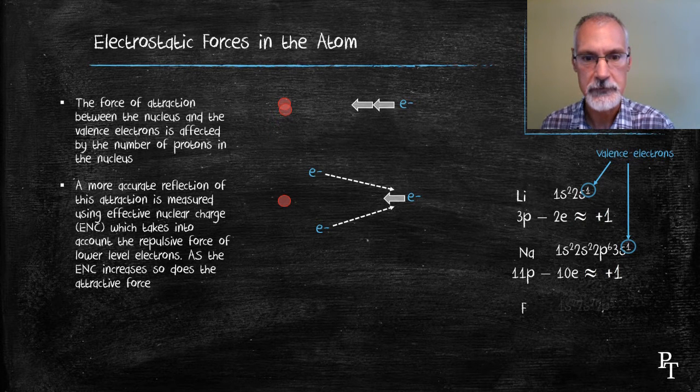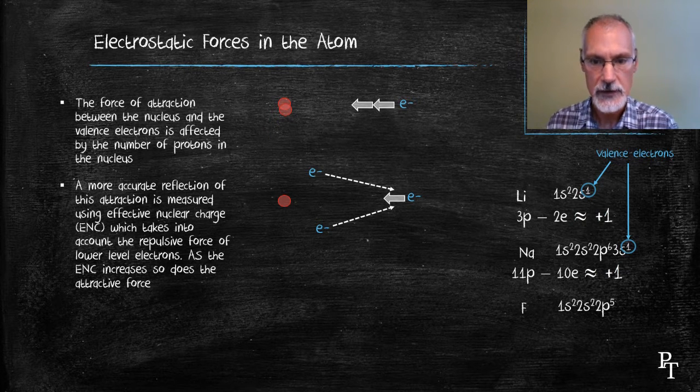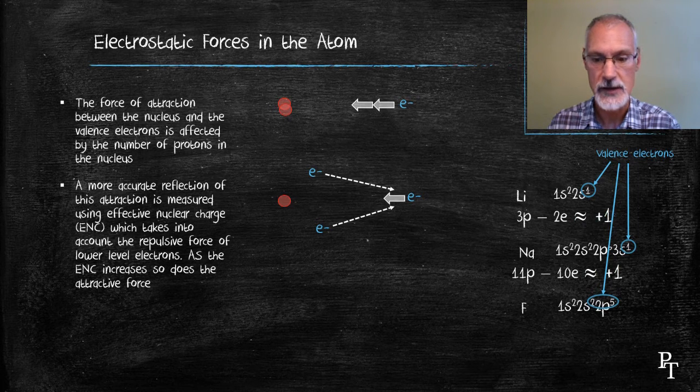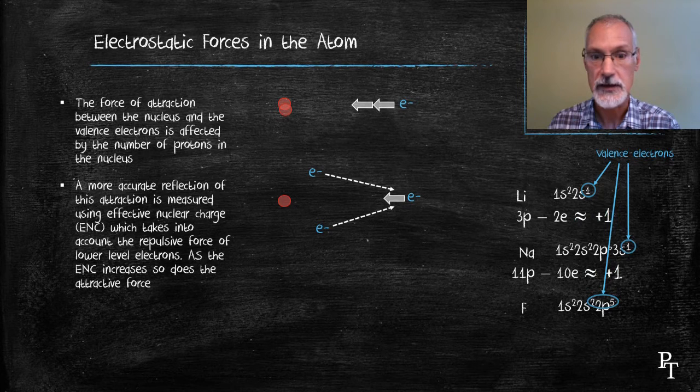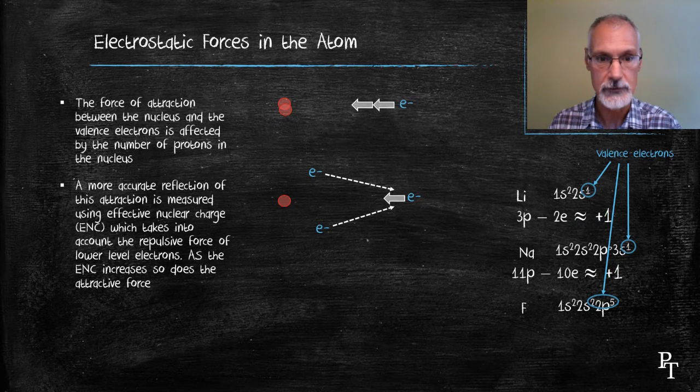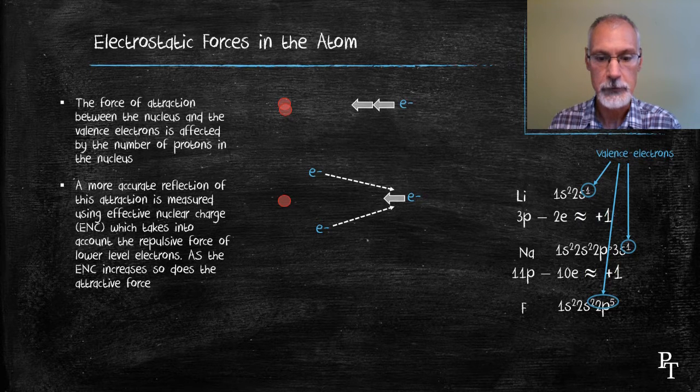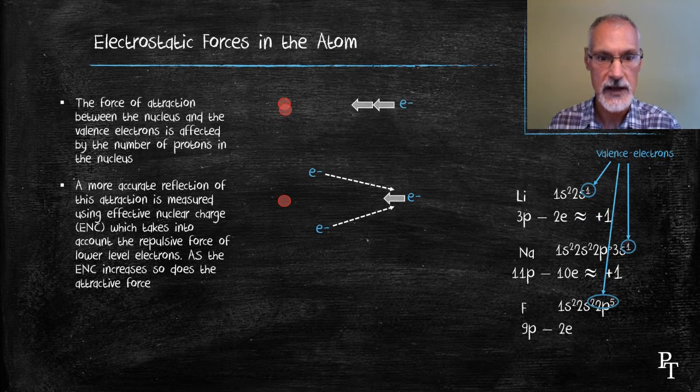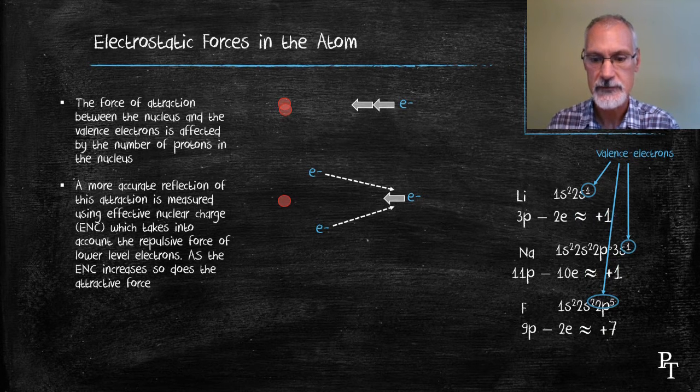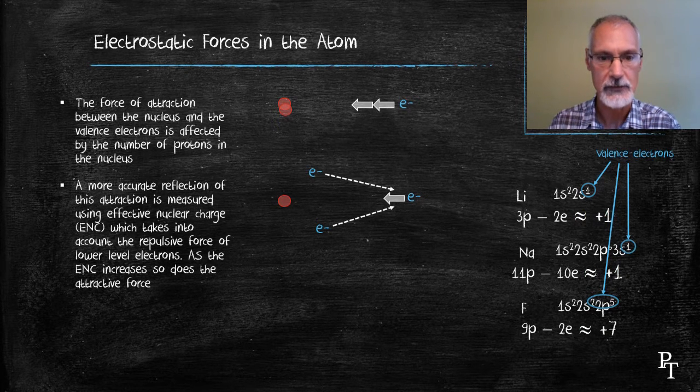Fluorine has the following configuration. Again, I'll identify its valence electrons. Those would be located at the second energy level. So it's both the two and the five. Seven valence electrons. That leaves two inner-level electrons. So fluorine's effective nuclear charge, being that it has nine protons, take away the two inner-level electrons, means its effective nuclear charge is about plus seven.